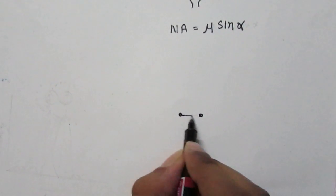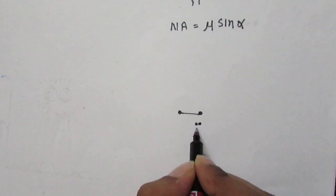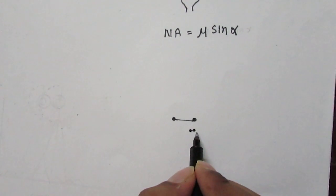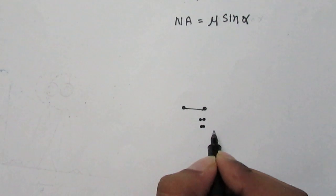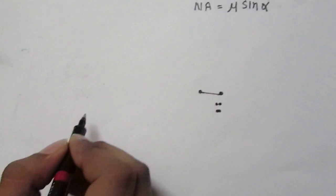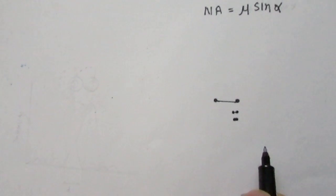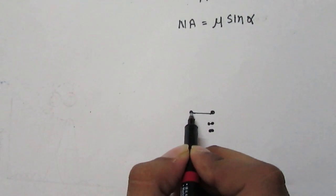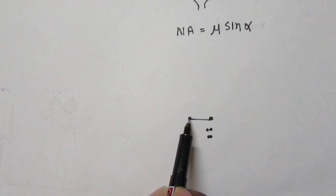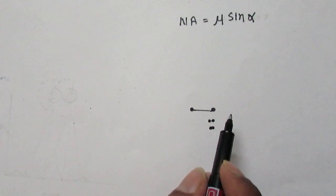Here we have two points with a certain distance between them, so we can easily differentiate that these are two different points. If the distance between these points is less, we can still differentiate them as two points. But if the distance becomes very small, we can't really differentiate between the two points. We need to understand what parameter tells us whether these two points are resolved or not resolved. Rayleigh has given a criterion for this.